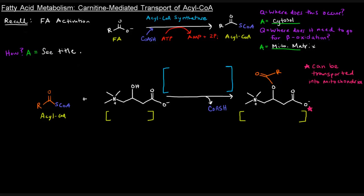What is carnitine and how does it work in this process? Carnitine is an amino acid because it has an amino group and a carboxylic acid. It's not an alpha amino acid like the ones we've learned before, but it is an amino acid by definition because it has an amino group and a carboxylic acid group. What needs to happen is the acyl portion of the acyl-CoA needs to be attached to the hydroxyl group of carnitine to yield a molecule called acyl carnitine.